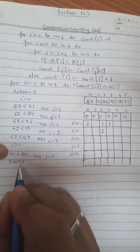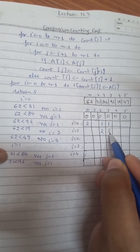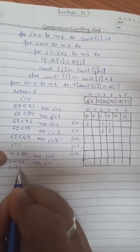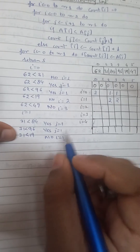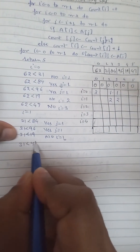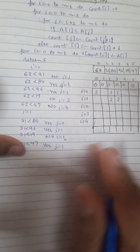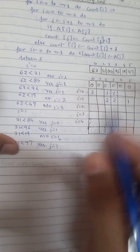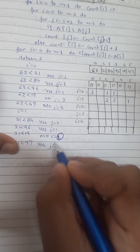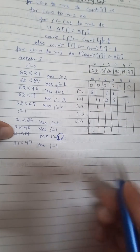Is 31 less than 19? No, so I increments; I value is now 1. Is 31 less than 47? Yes, so J increments. 47 is at the 5th position, so we put 1 there. We have now reached the end of the inner loop for I=1. I value is 1, so we put 1 at the position of 31.